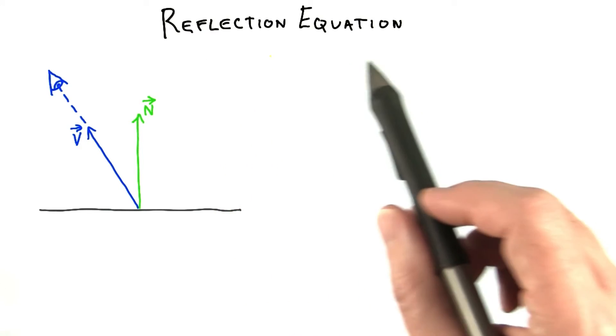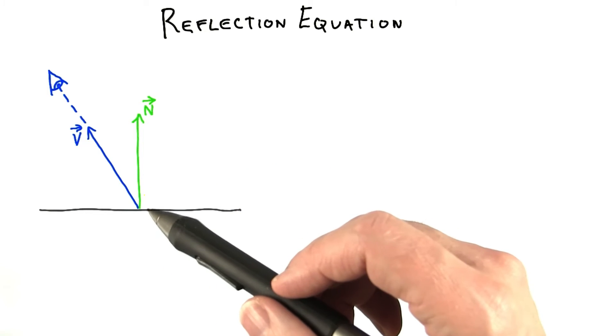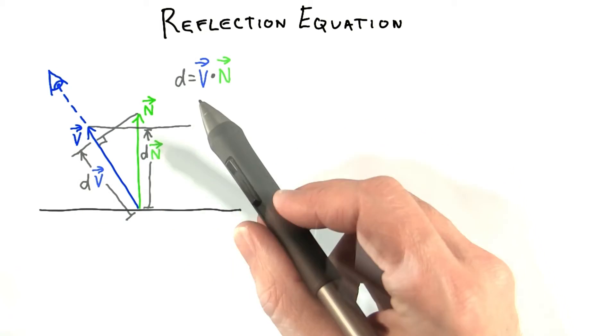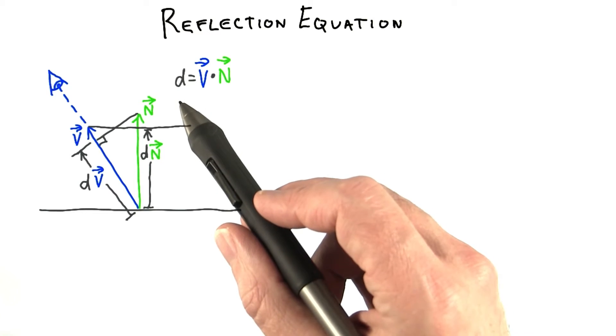Your task is going to be to derive the reflection equation. Say you're given the v vector towards the eye and the mirror surface's normal n. These two vectors are normalized and the dot product between them is computed and stored as d.